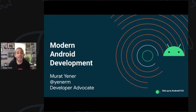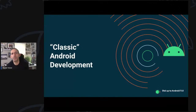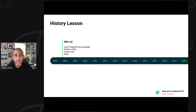Before we start, what does really modern Android mean? Probably to understand it, we need to talk a little about classic Android development and what were the milestones. Let's see some history. First, Android SDK, which is called MT — stands for Milestone Tree — was released in 2007.